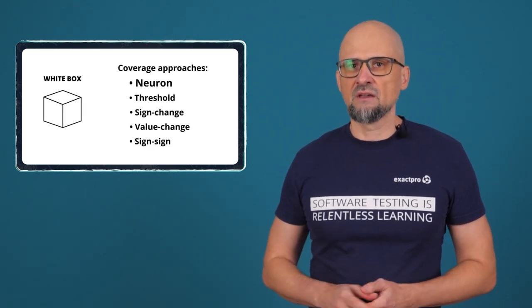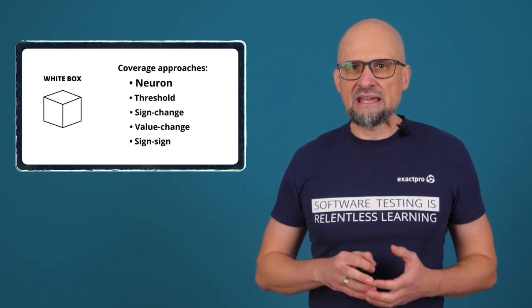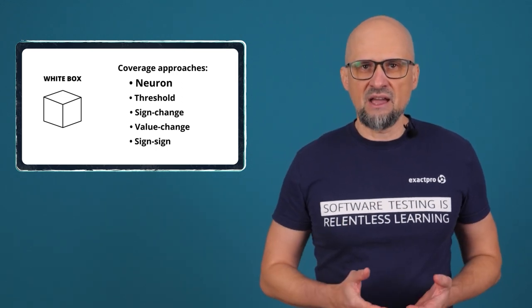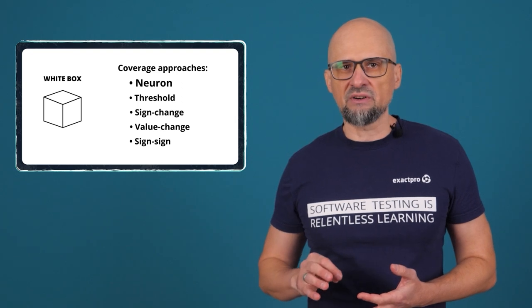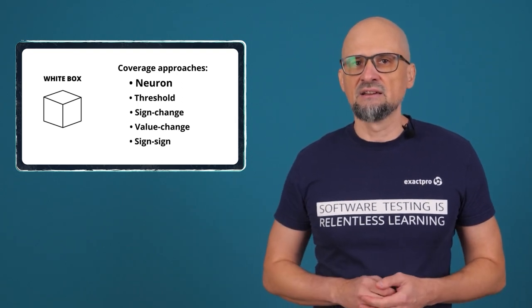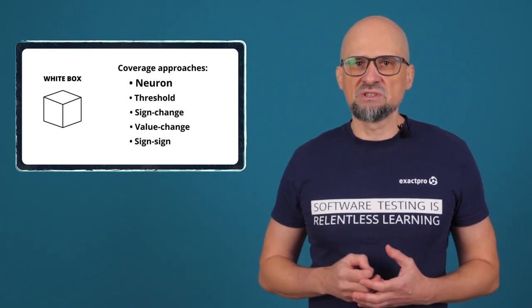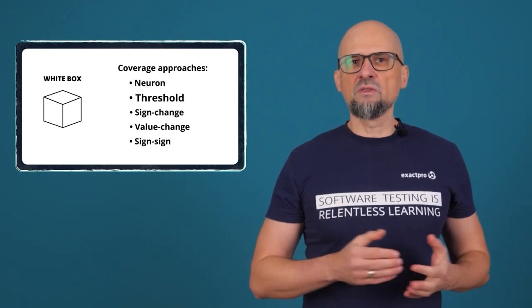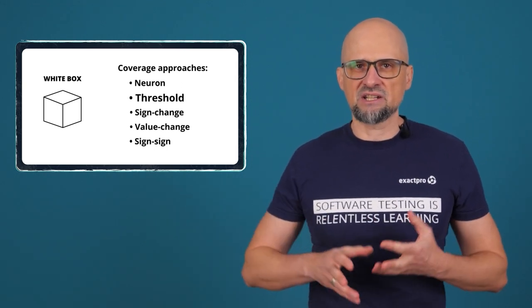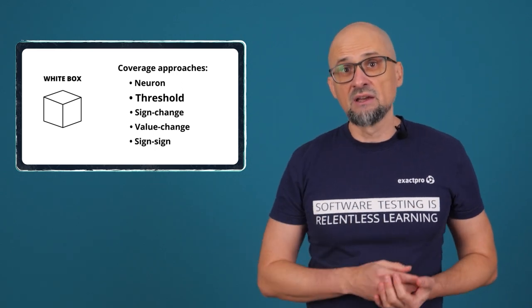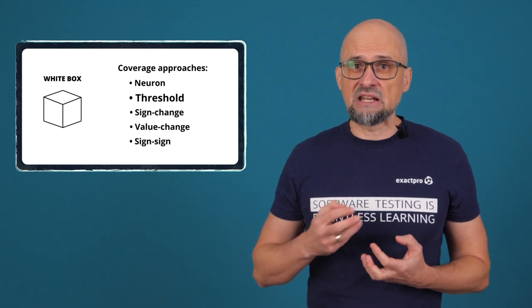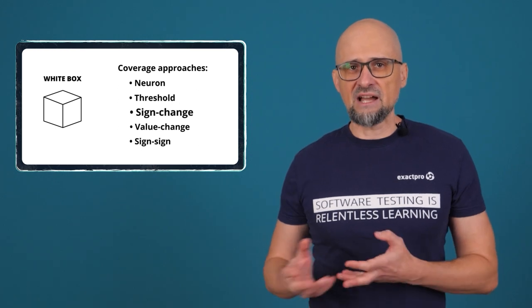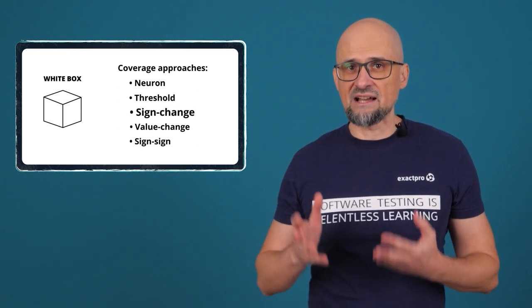The following approaches have been proposed by researchers. Neuron coverage: full neuron coverage requires that each neuron in the neural network achieves an activation value greater than zero. It is very easy and research has shown that almost 100% coverage is achieved with a few test cases. This coverage measure may be most useful to serve as a red flag when it is not achieved. Threshold coverage: full threshold coverage requires that each neuron achieves an activation value greater than a specified threshold. This type of coverage has been given this name here in order to easily distinguish it from neuron coverage with a threshold set to zero.